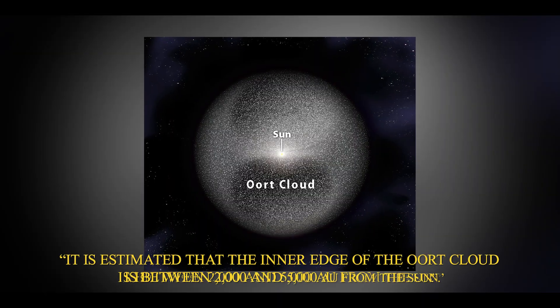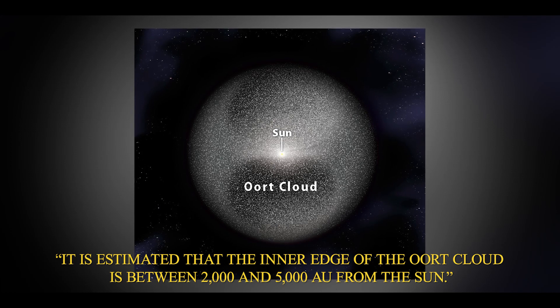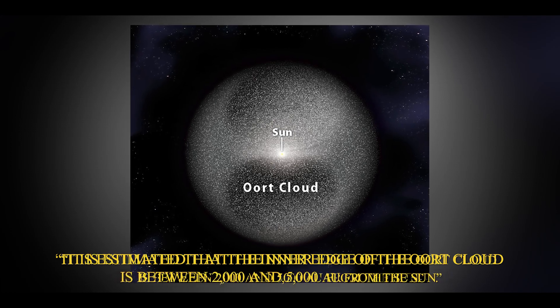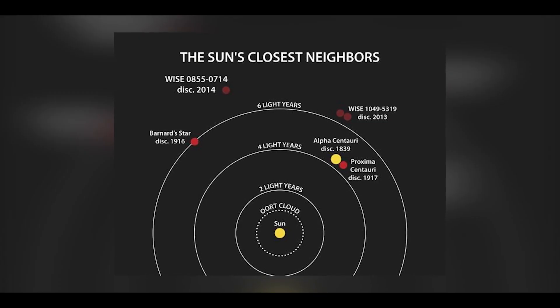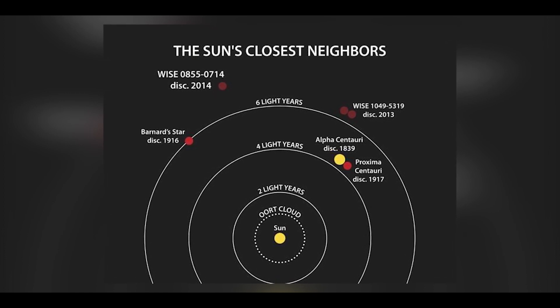It is estimated that the inner edge of the Oort Cloud is between 2,000 and 5,000 AU from the sun. So it is about one quarter to half the distance between the sun and its nearest neighboring star.